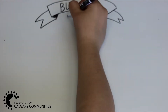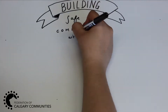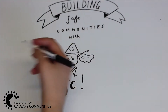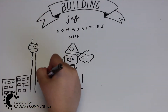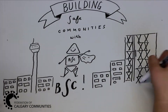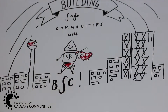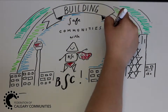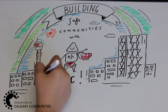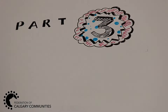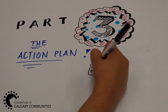Welcome to Building Safe Communities. BSC has trained the residents at the Community Association. Residents have discussed their issues and they have created crime prevention solutions. There's only one thing left: the action plan. In this final video, watch as BSC shows the steps to creating an action plan. Part 3: The Action Plan.